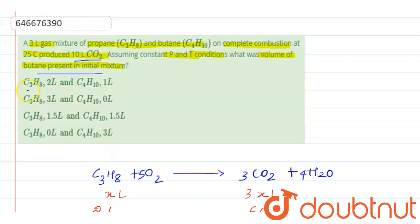Look at the options. Option A, propane was 2 liters, and butane is 1 liter. So option A is the right answer.